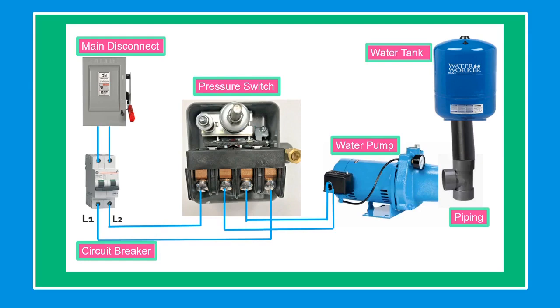The pressure switch is a device that turns the pump on and off according to water demand. The pump is a mechanical device using suction to move water or liquid from one location to another.